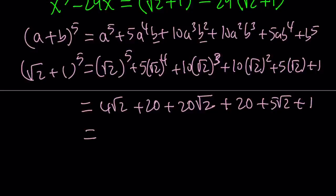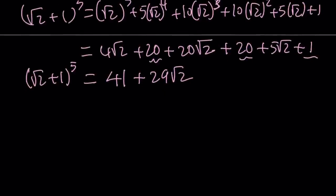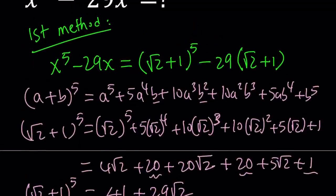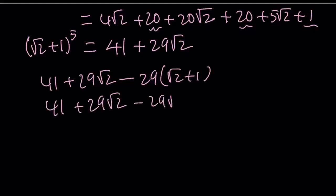Now let's simplify this by adding the radicals together and the integers together. So I have 20 plus 20 plus 1, that is 41, and then 20 plus 5 is 25, plus 4 is 29, and multiply by root 2. So this is the part where we raise square root of 2 plus 1 to the 5th power, but we've got to subtract something from it. So now we're going to do 41 plus 29 root 2 minus 29 times root 2 plus 1.